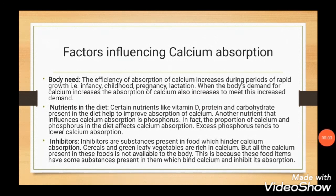First factor is body need. The efficiency of absorption of calcium increases during periods of rapid growth — that is infancy, childhood, pregnancy and lactation. So when the body's demand for calcium increases, the absorption of calcium also increases to meet this increased demand. Next is nutrients in the diet. Certain nutrients improve the absorption of calcium — these are vitamin D, protein and carbohydrate. There is also another mineral in diet that alters calcium absorption: phosphorus. Excess phosphorus tends to lower calcium absorption.